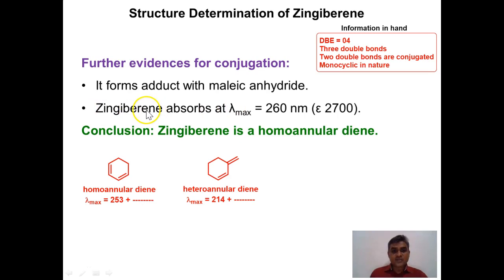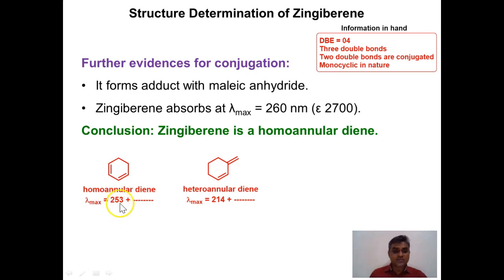The UV spectrum of zingiberene shows a λmax value of around 260 nm, which is characteristic of a homoannular diene. According to the Woodward-Fieser rule, the base value for a homoannular diene is 253 nm, with additional increments for ring residues or substituents. The base value for a heteroannular diene is 214 nm. Since the observed value of 260 nm is much higher, it confirms that zingiberene contains a homoannular diene system.